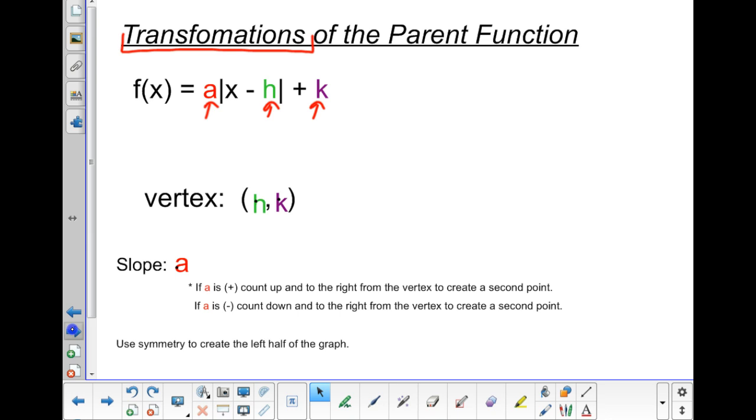Now, here's the rule. If a is a positive number, then I will count up and to the right from the vertex to create a second point other than the vertex. If a is a negative, I have to count down and to the right from the vertex to create my second point. Now, let's take a look at one more important characteristic of an absolute value function, and that's the idea of something called symmetry, okay?